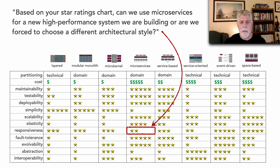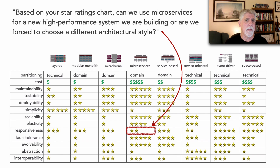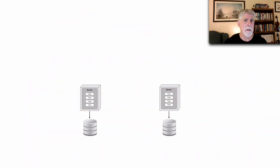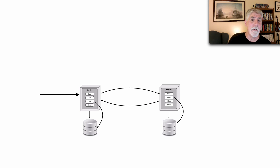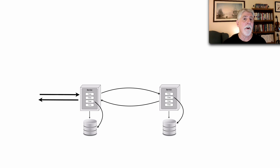Let's go back to the question: can we use microservices for a high-performance system, given that it shows two stars? Let's look at why we actually rated it two stars. The bottom line is that it all has to do with latency due to inter-service communication. When we make a request to a service, that service retrieves data from its own database within its bounded context, but then commonly has to go to other services to get further data, which may do some processing, return that information back to the calling service — this chain happens quite often — and finally returns the result to the user.